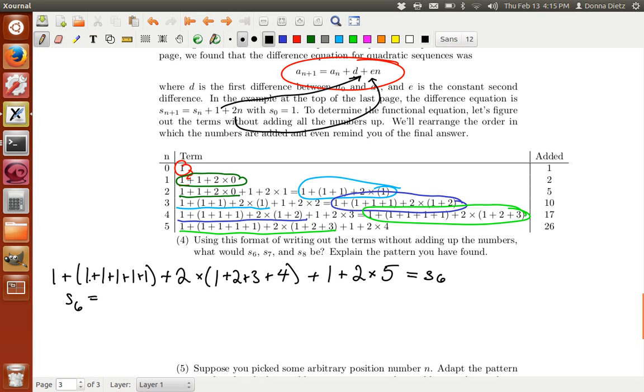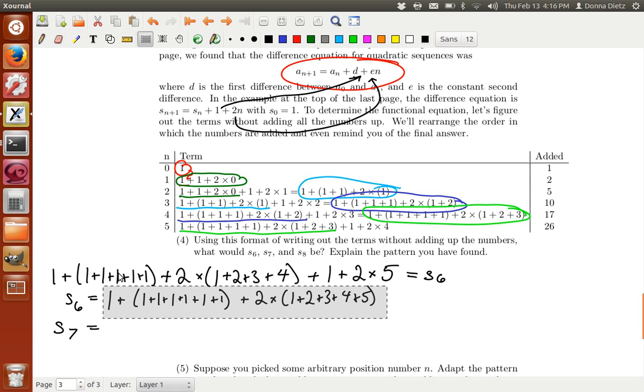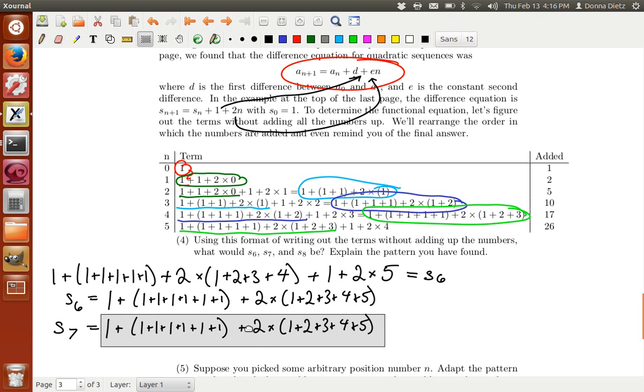And then what do I have? Then I've got a two times something. What do I have? I'll have two times 1 plus 2 plus 3 plus 4. It's following the pattern. There was a one, a one plus two, one plus two plus three plus four. And then I'm adding on the next part, 1 plus 2 times 5. So this is s6. Now we can rearrange that. Notice, because how many sixes do I have? Well, I have five, six, seven of them.